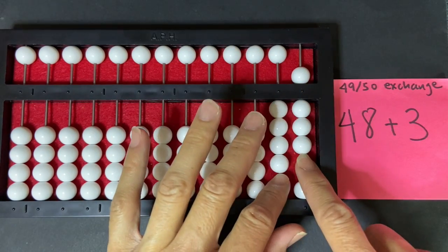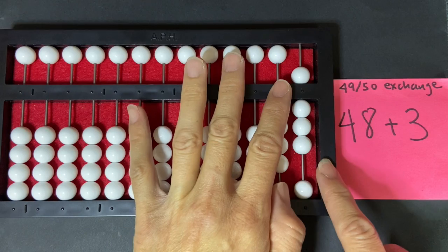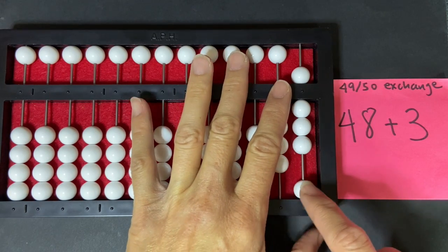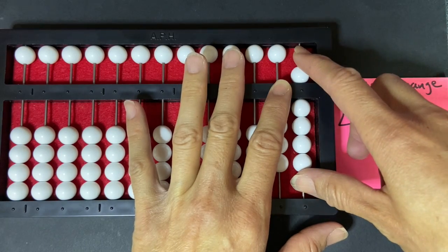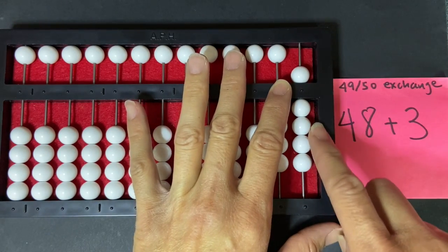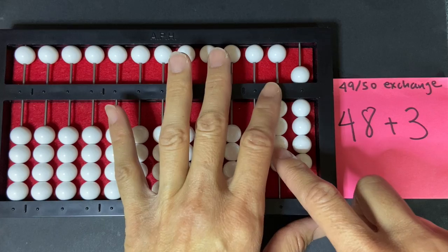I've set my 48, and now I want to add 3, so I'm working in the units column. I add 1, but now this rod is full, and so I have to move over to the tens.